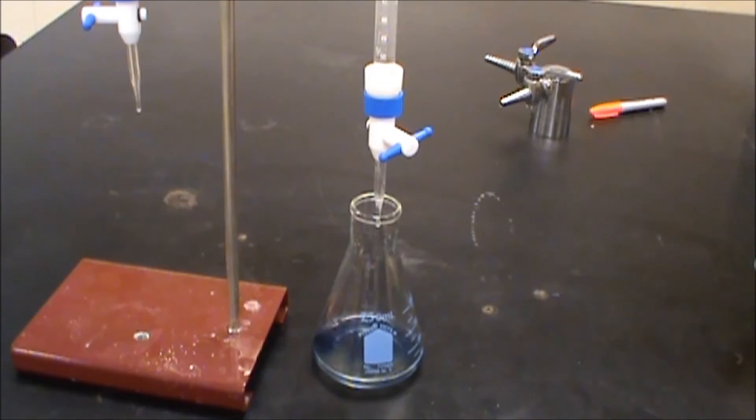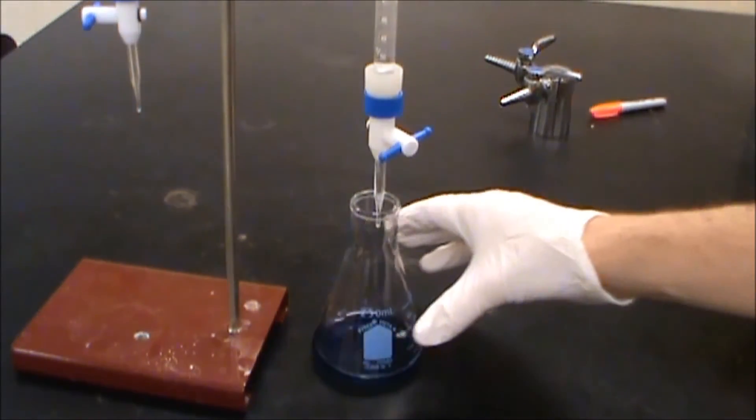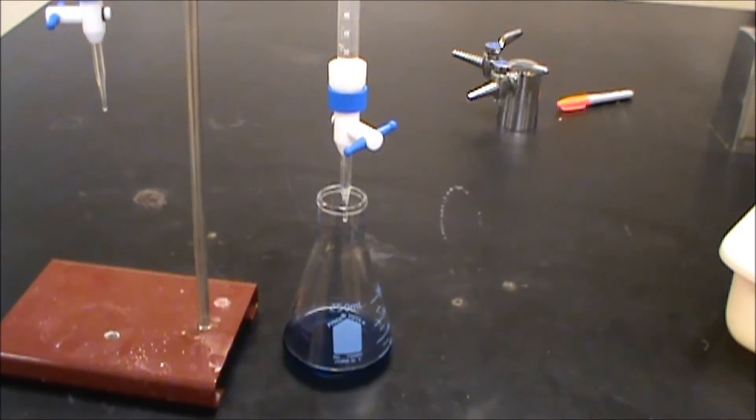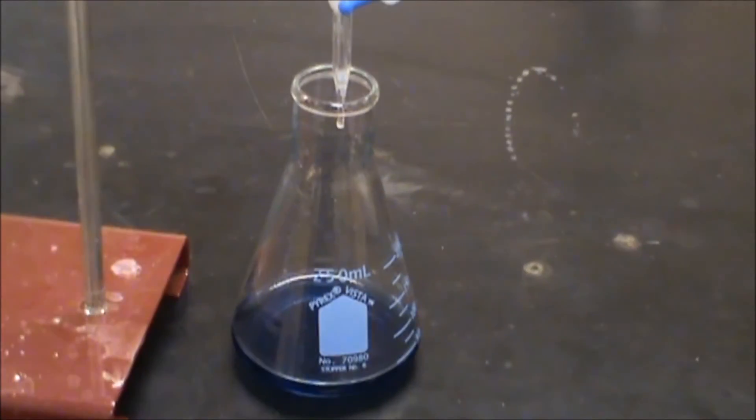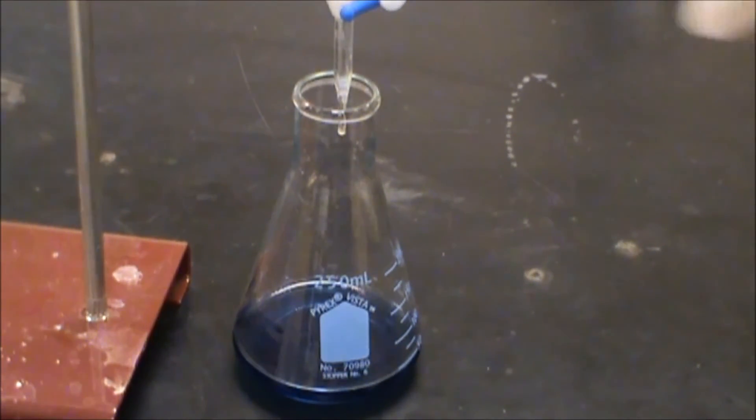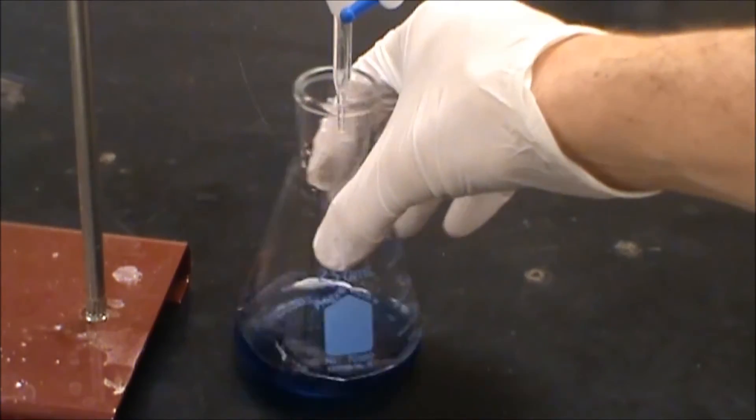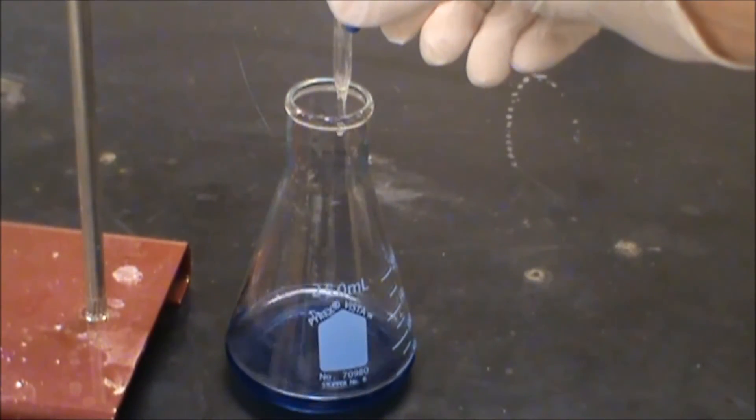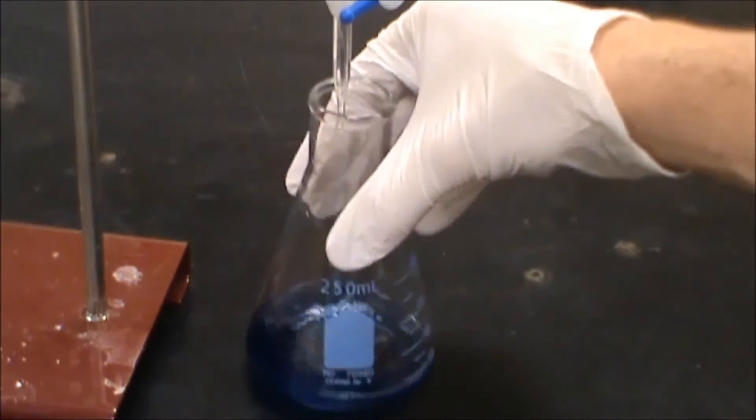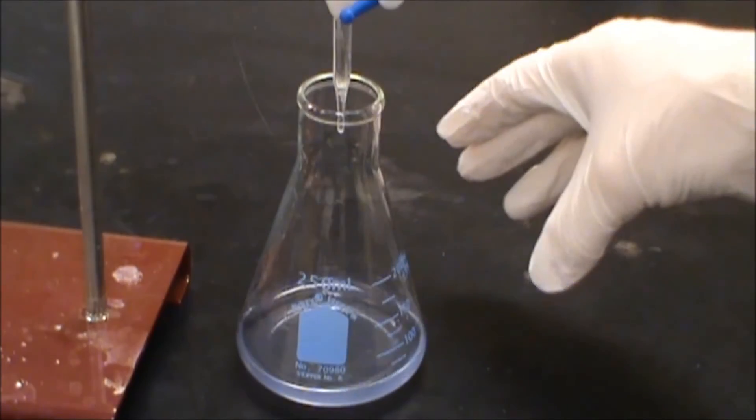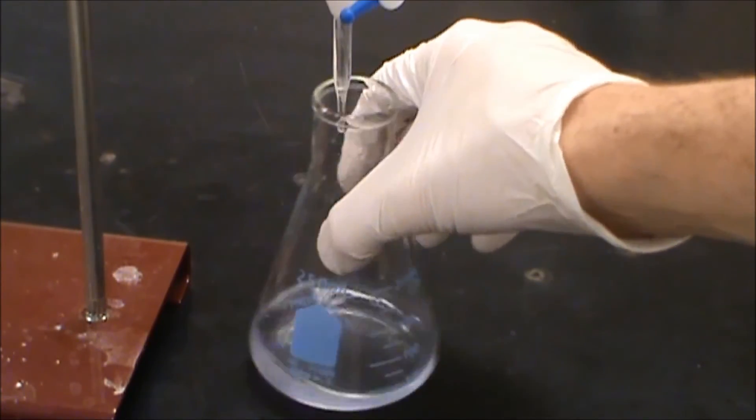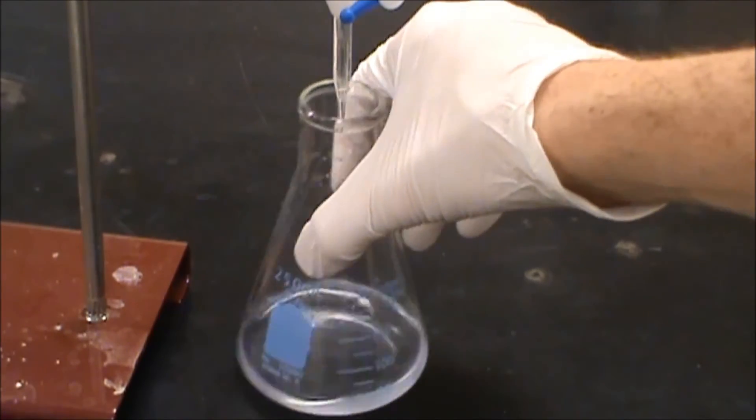So now we can go ahead and continue with the titration in a slower fashion until that endpoint is gone. Now the thiosulfate we're adding here is very low in concentration. It's 0.0025 molar. Looks like that might have hit our endpoint. Perhaps even a little too fast.